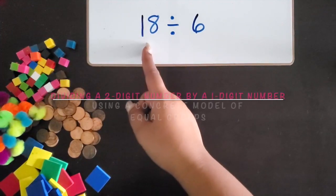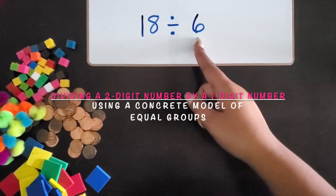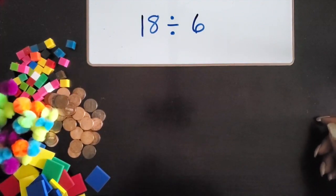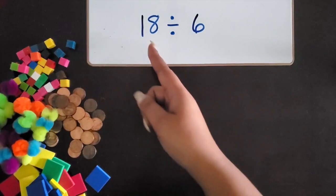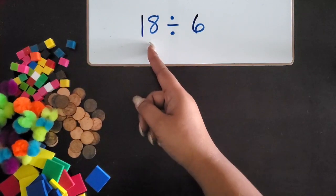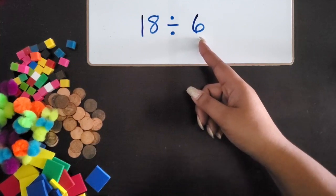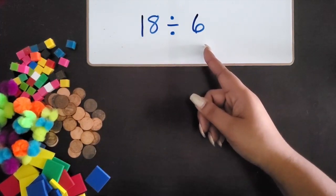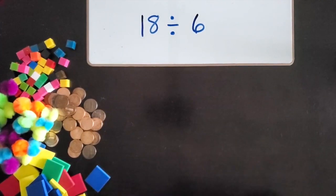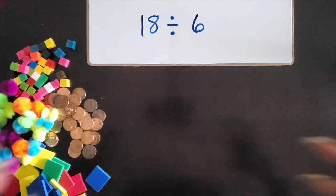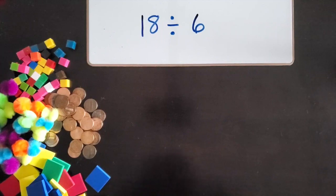We are going to take a two-digit number and divide it by a one-digit number using concrete models with manipulatives of equal groups. With division, you start with the total or the dividend, and you're dividing it by the divisor — the number of groups or the number in each group. When students are first learning division, you want to use that language of number of groups or number in each group. This helps make a connection to multiplication.